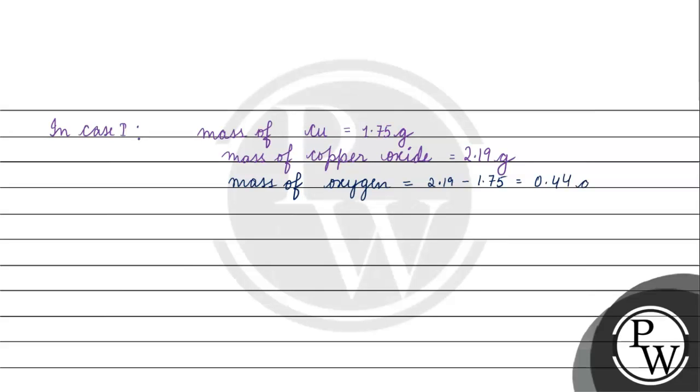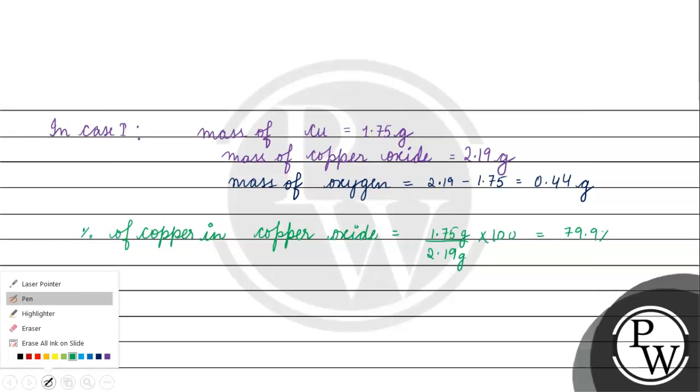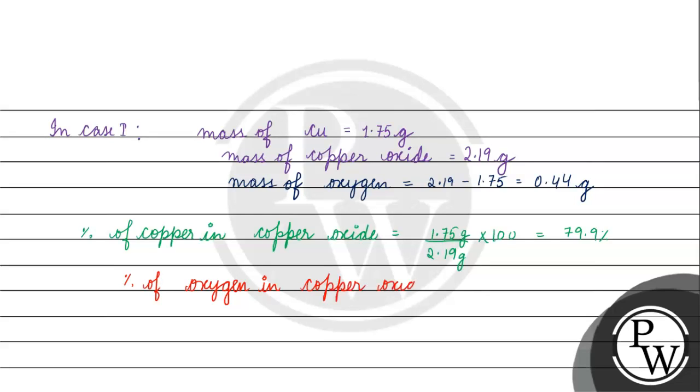Now let's talk about the percentage of copper in copper oxide. The mass of copper which is 1.75 grams by mass of copper oxide. This gives us the percentage of copper in copper oxide.